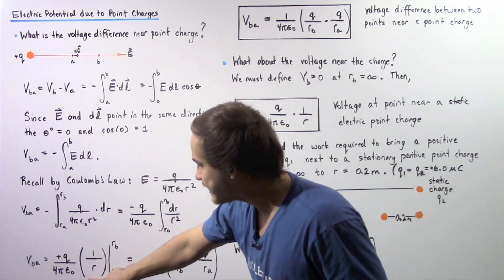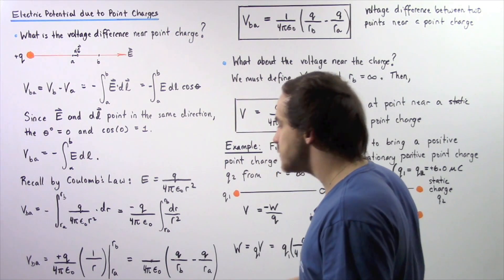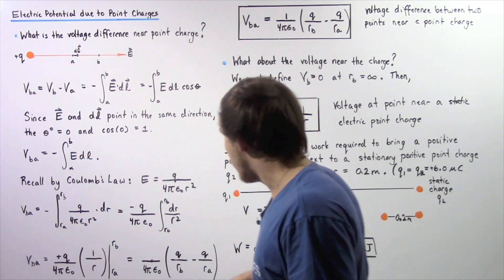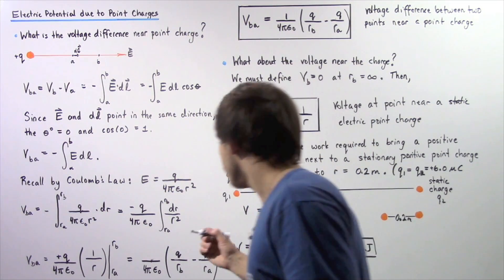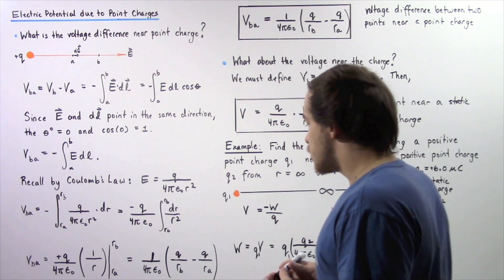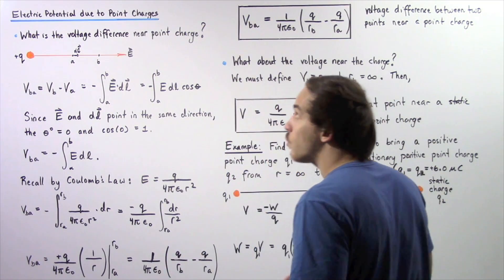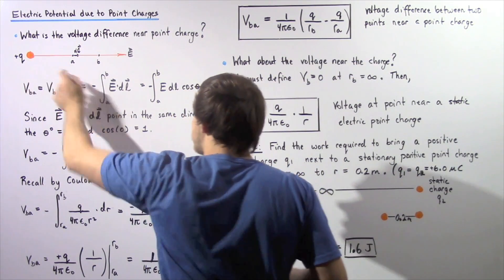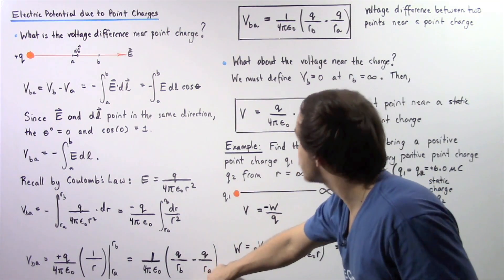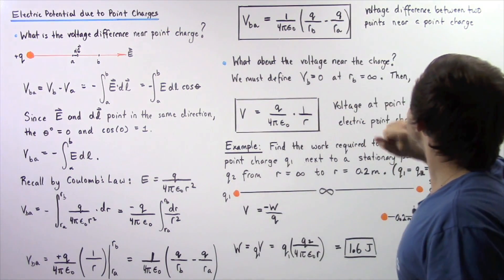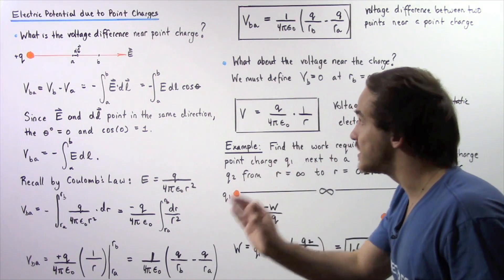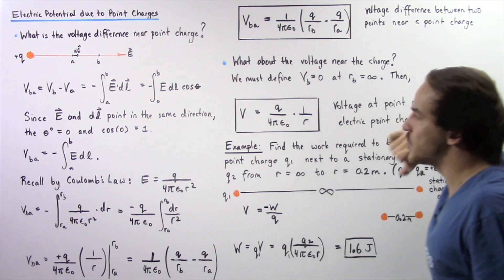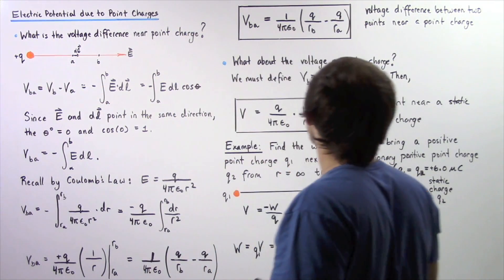Integrating dR over R squared introduces a negative sign, and we evaluate the integral to get the final result. Distributing Q gives us the equation for the voltage difference between two points A and B as a result of a single stationary point charge: V_AB = Q/(4πε₀) × (1/RA − 1/RB).